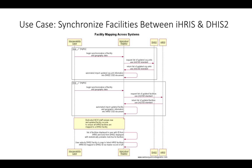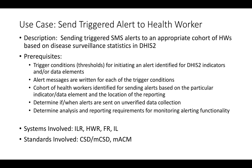Once we have synchronization between the IRIS and DHIS-2 facilities, we'll know which health workers are working at which facility and would be reporting to DHIS-2 or potentially receiving an alert based on their catchment areas. That gets us into our next use case: sending a triggered alert to a health worker — sending an SMS alert to an appropriate cohort of health workers based on disease surveillance statistics in DHIS-2 that have been reported and approved.